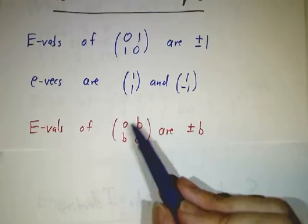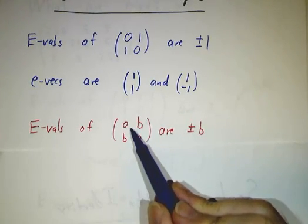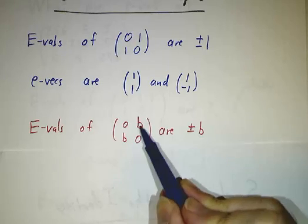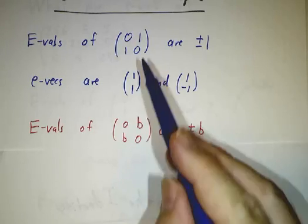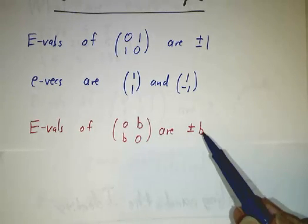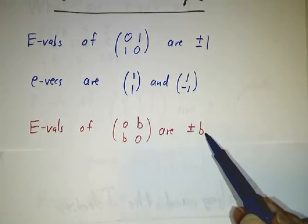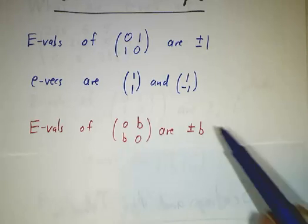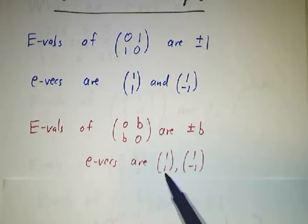Well, what about if you multiply that by a constant b, (0,b,b,0)? Well, you should just think of that as (0,1,1,0) times b. Instead of the eigenvalues being plus or minus 1, they're now plus or minus b, and the eigenvectors are the same as they always were.